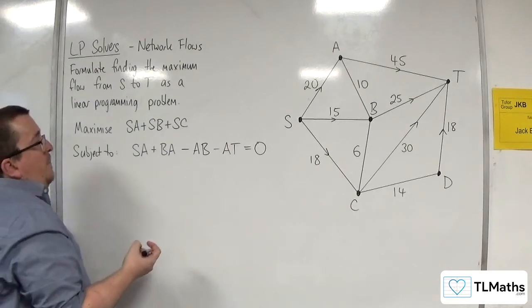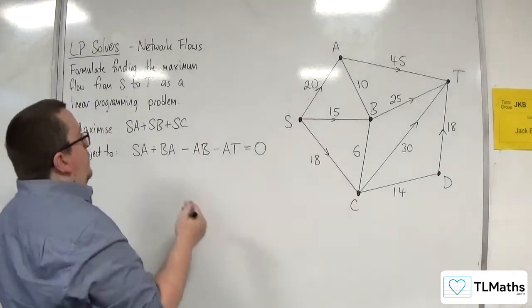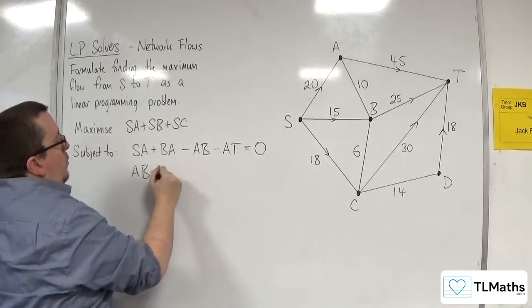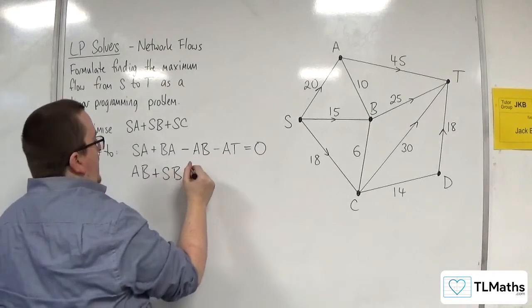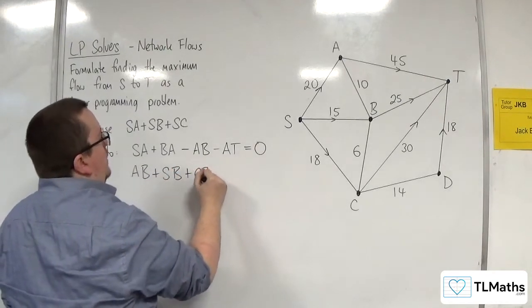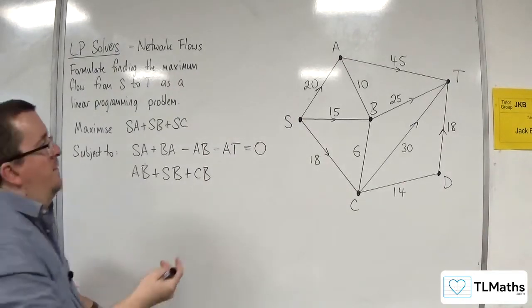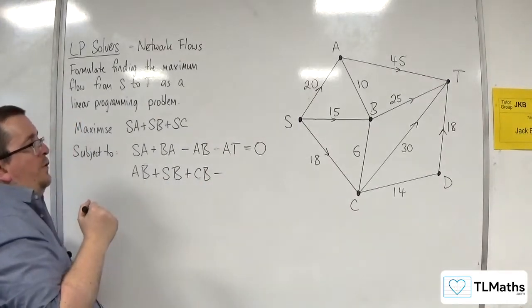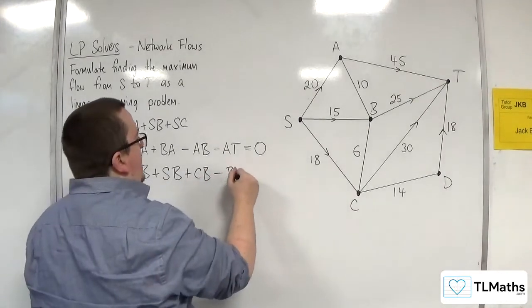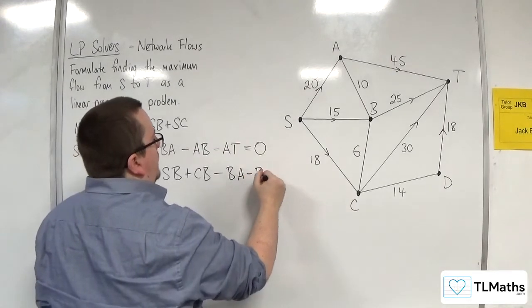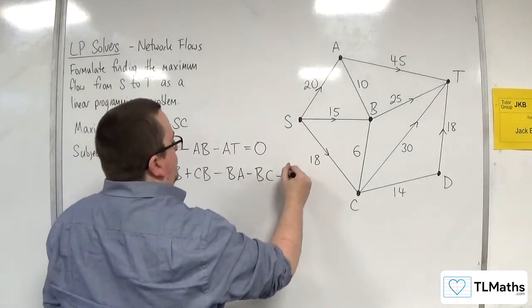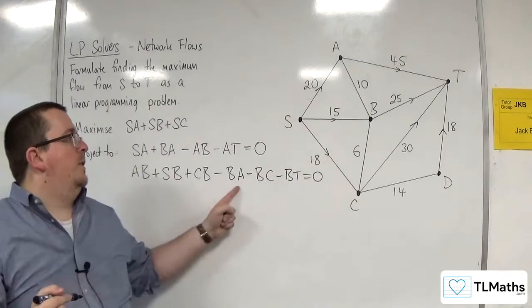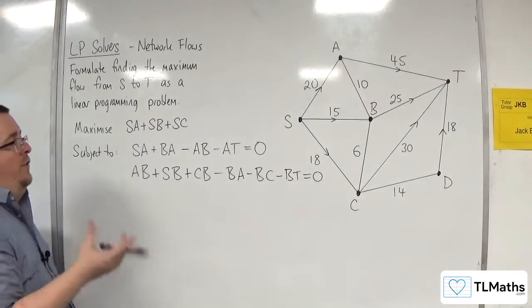Now, for vertex B, routes going in, we can have AB or SB or CB. We can't have TB. Can't have that because that's going back along that edge there. So take away all of the flows going out. So that could be BA or BC or BT. And that's got to be equal to zero. So that's your flow in. Take away your flow out. It's got to be equal to zero. So that's B.